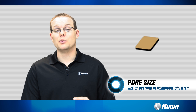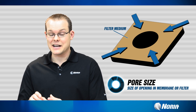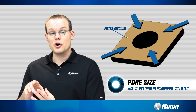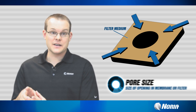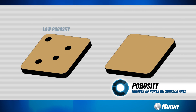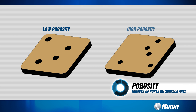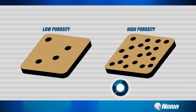The first thing is going to be pore size. Pore size, pretty simple, is the actual size of the opening in that membrane or in that surface area of that filter. The next thing we're talking about is porosity. It's basically how many pores do you have per surface area. Another way to think about this is the amount of open space versus the filter media itself.